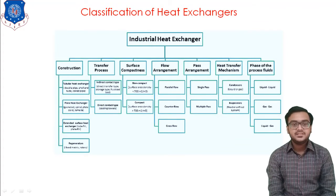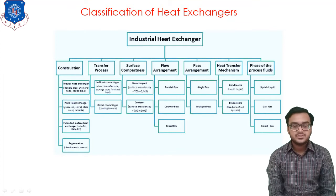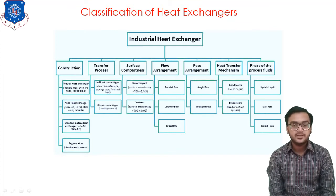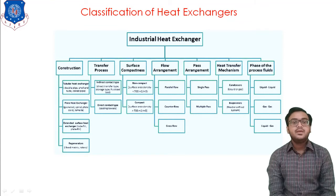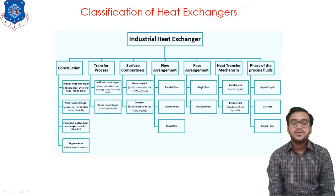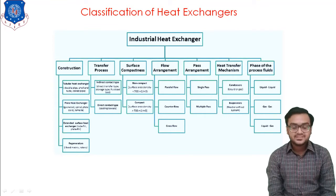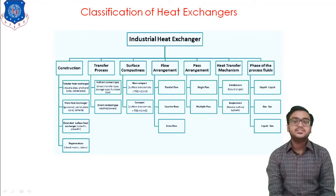Industrial heat exchangers are classified into a number of varieties. First, according to construction, heat exchangers are classified into four categories: tubular heat exchangers, plate heat exchangers, extended surface heat exchangers, and regenerators.